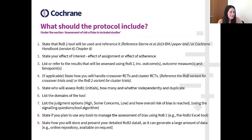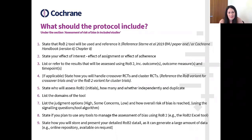There are nine items that the section 'Assessment of Risk of Bias in Included Studies' should include in the protocol. Ideally, we'd love the authors to reference the tool — ideally the paper in the BMJ, but also the Cochrane Handbook, or both.